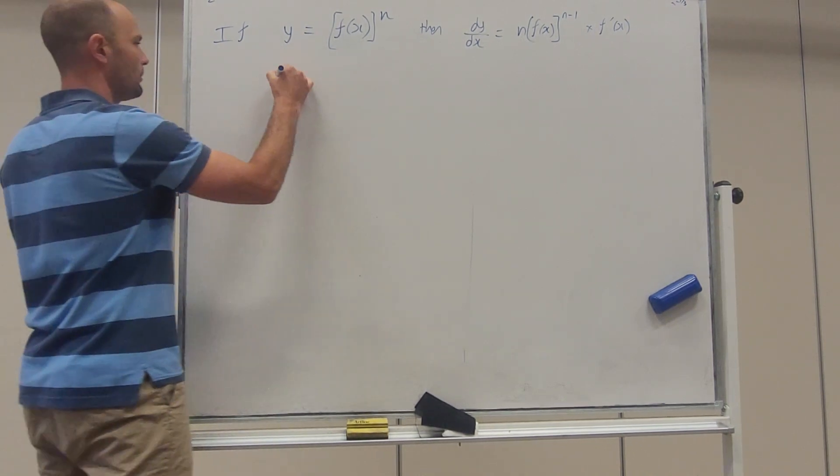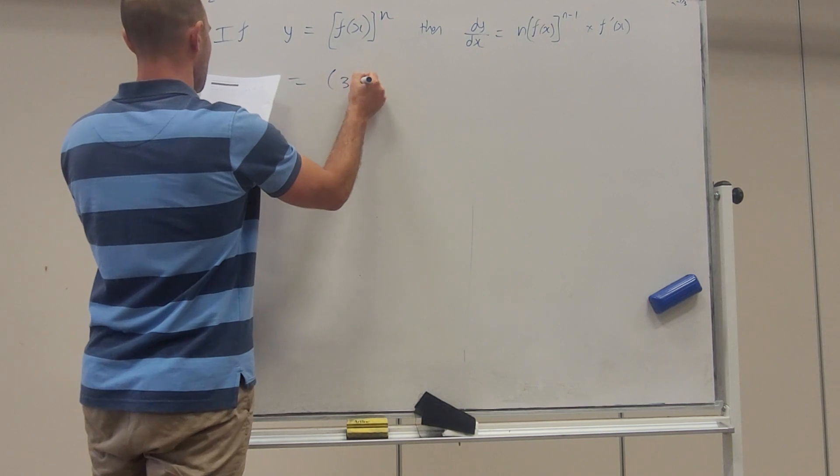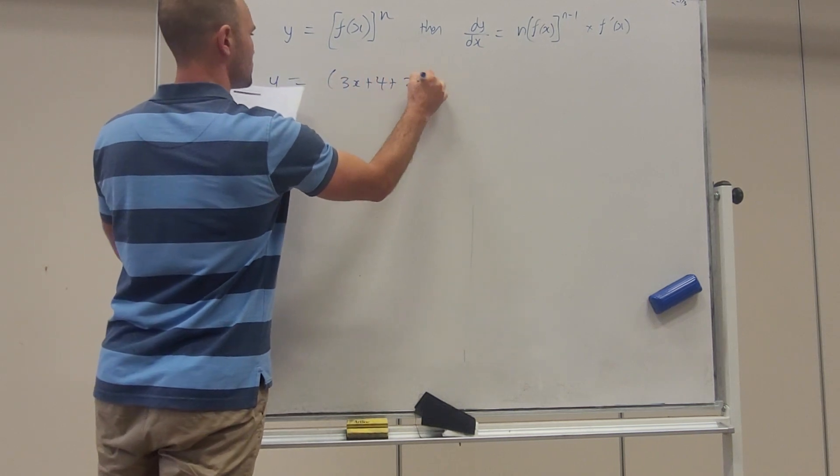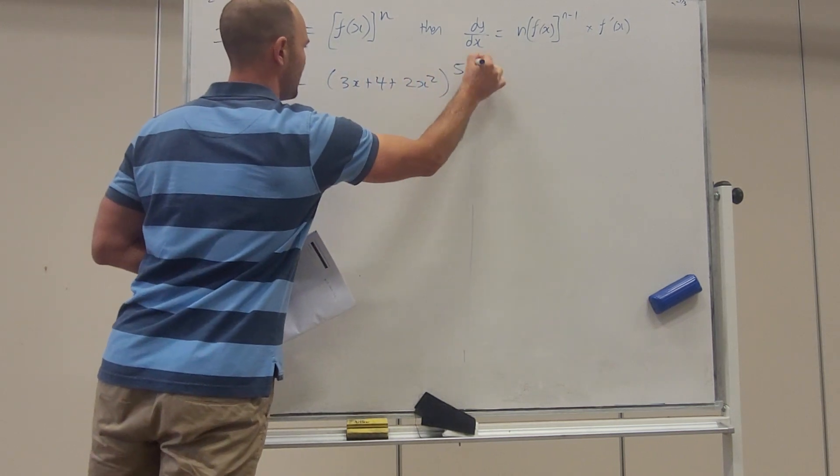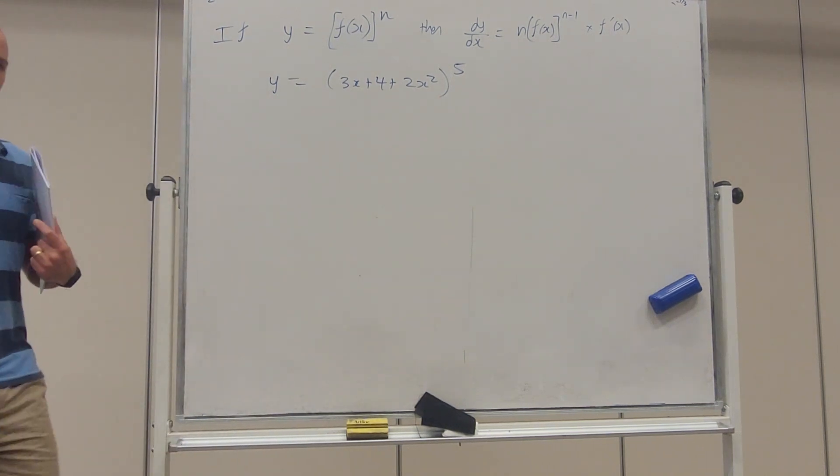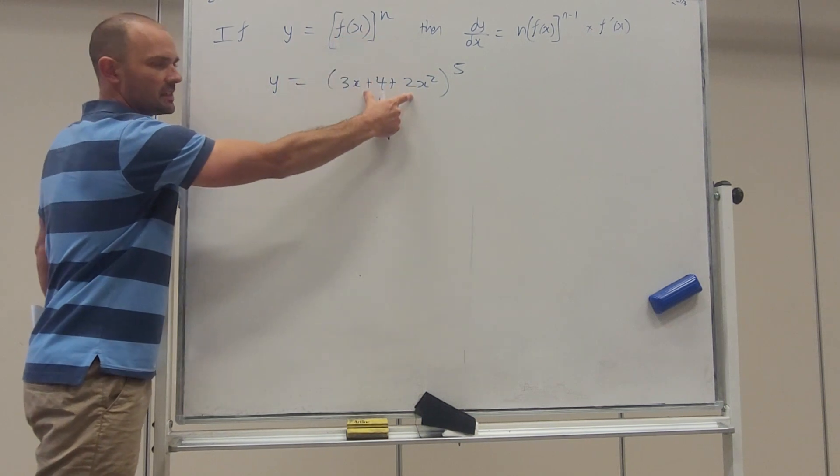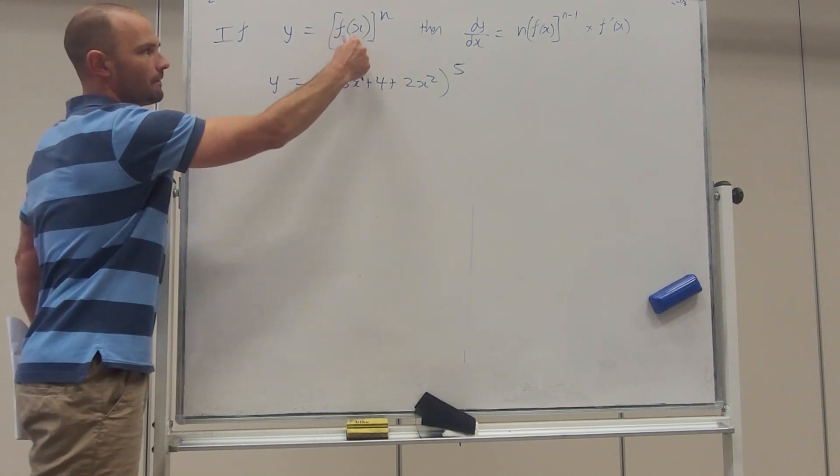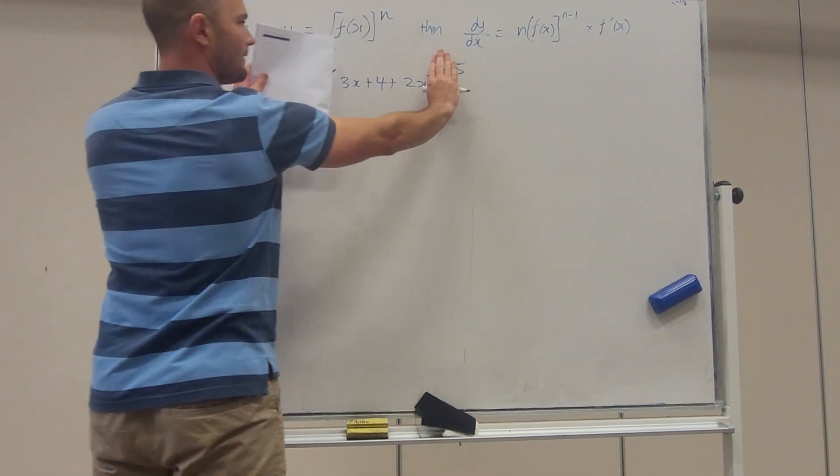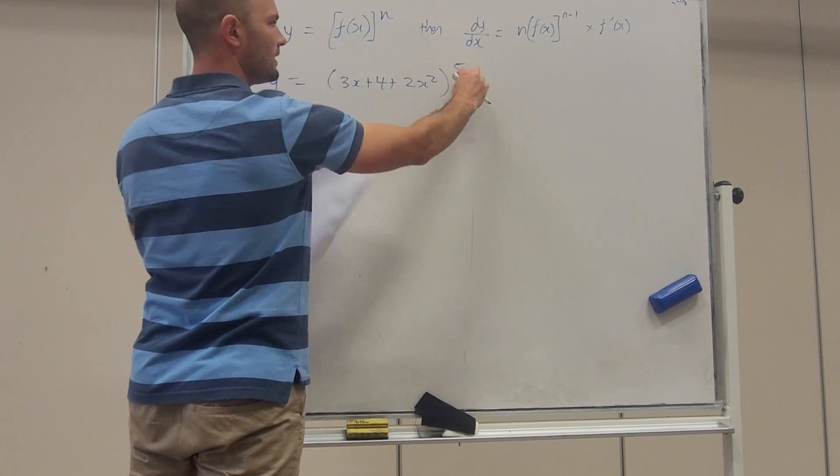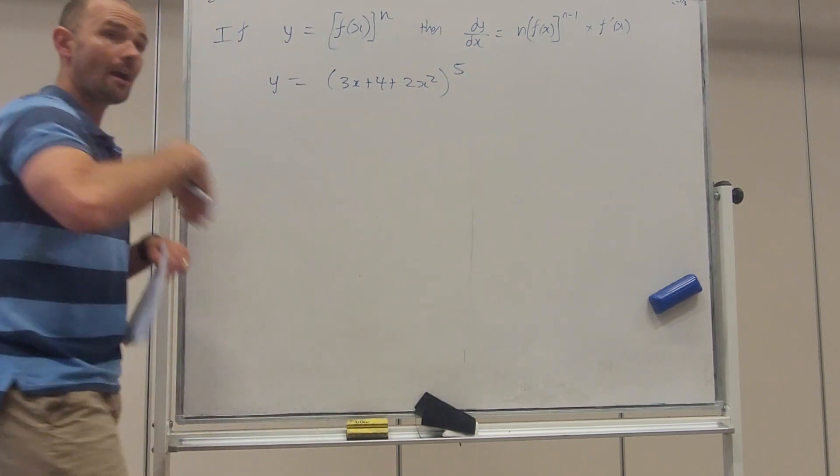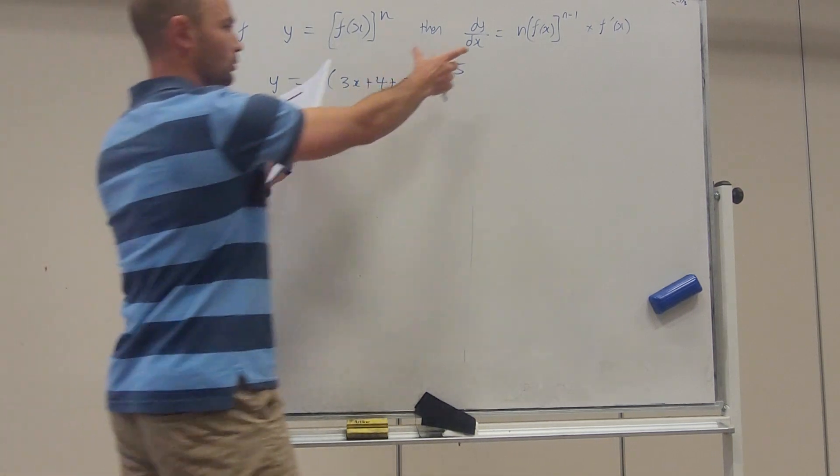So we have, the example we have is (3x + 4 + 2x²)^5. And so we're trying to recognize a relationship between this statement and this one. Okay, f(x) to the power of n, f(x) inside the brackets to the power of n. So I'm just going to follow that rule.